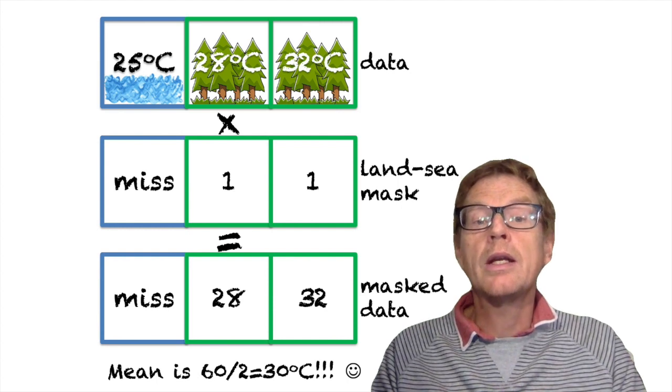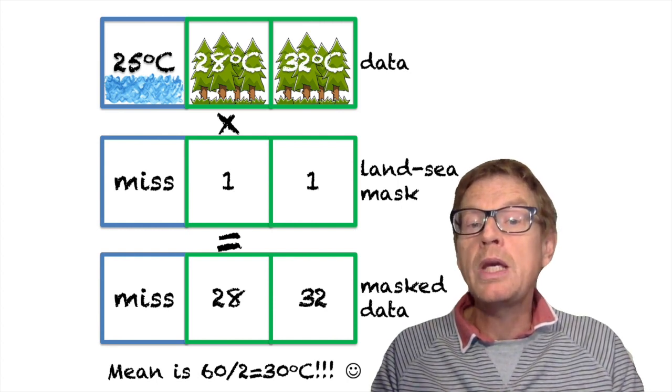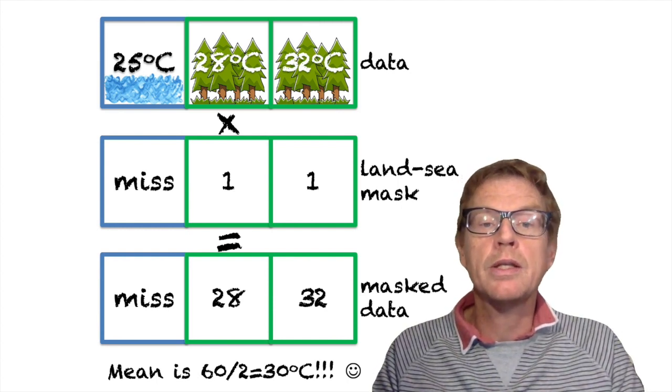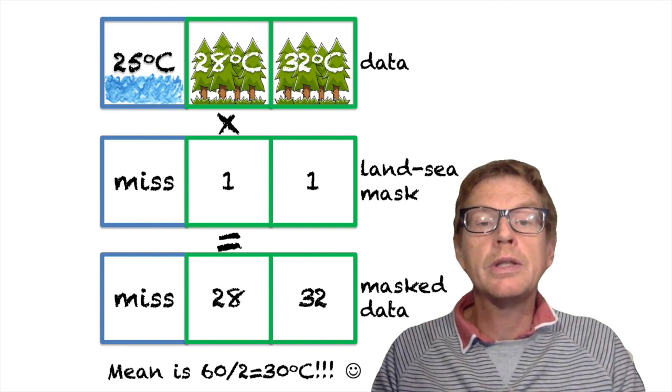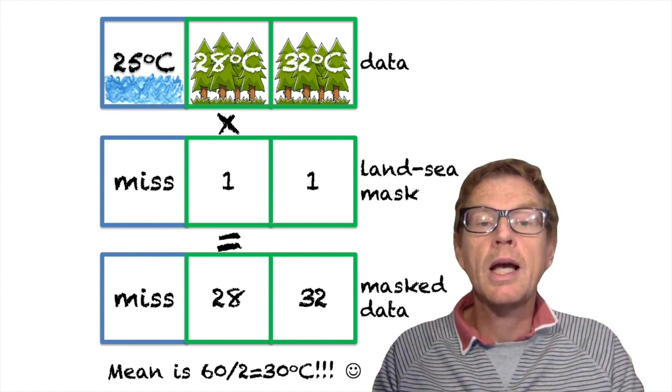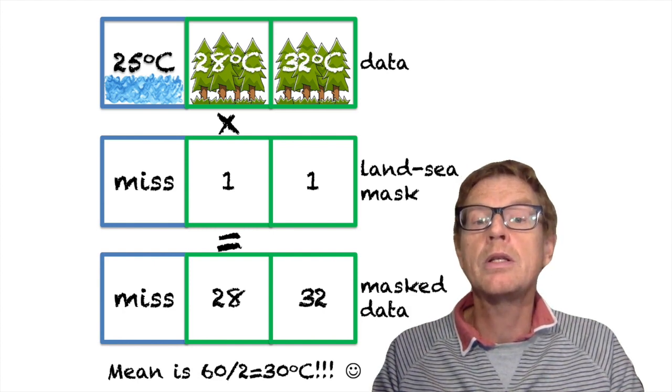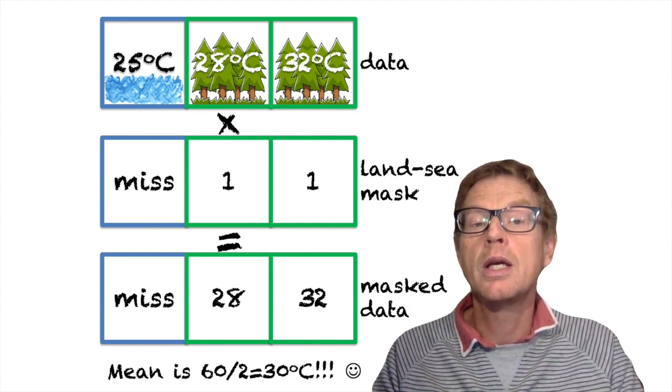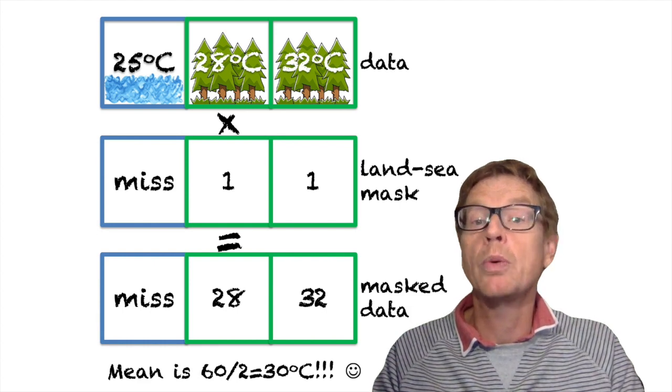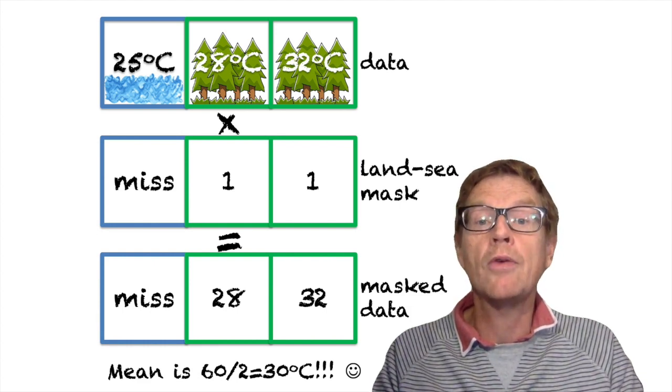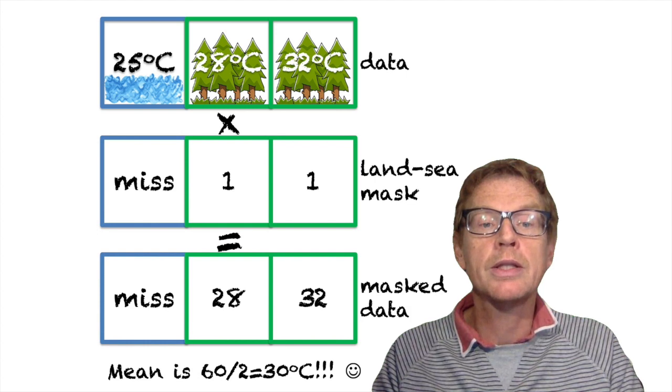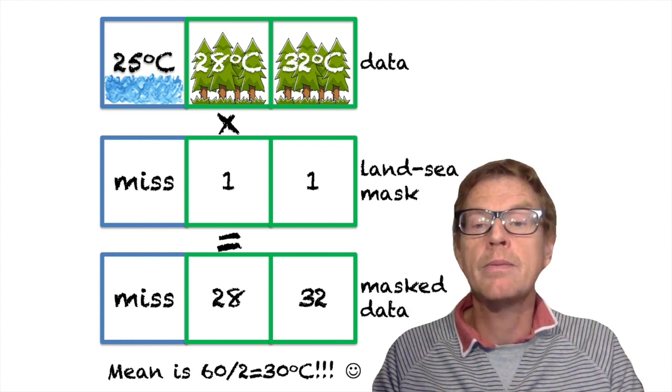Well, what we actually want to do then is set the zeros to missing in these data files. And if we do that, then now if we take the mean in the spatial sense, then we have 32 plus 28 plus missing and the mean function ignores the missing values. So now we have 60 divided by two, which gives us the correct mean spatially. Remember, we need to use mean and not average because average will just set the result to be missing if there's a missing number present.